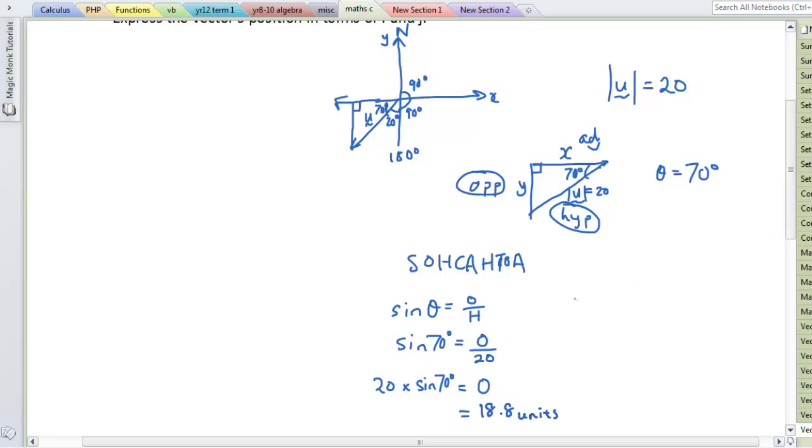So let's do the similar thing with x. Actually I should have substituted y into that equation just so that people don't get mixed up. So we got y, so y equals 18.8 units. And now we want to find x. So we've got the hypotenuse. We're going to use cos theta equals a over h. So cos 70 equals x over 20. So x equals 20 cos 70.